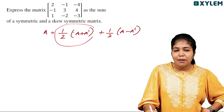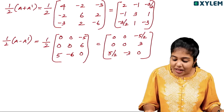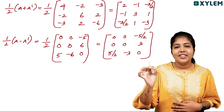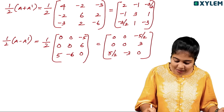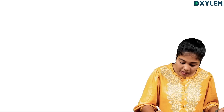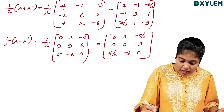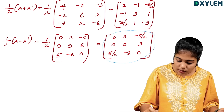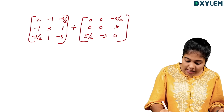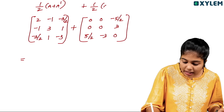We will multiply the substitution: if we have half of A plus A transpose and half of A minus A transpose, we will add the two matrices together. So, half into A plus A transpose, plus half into A minus A transpose — this is the complete expression.